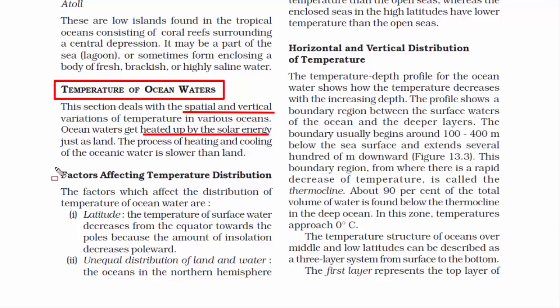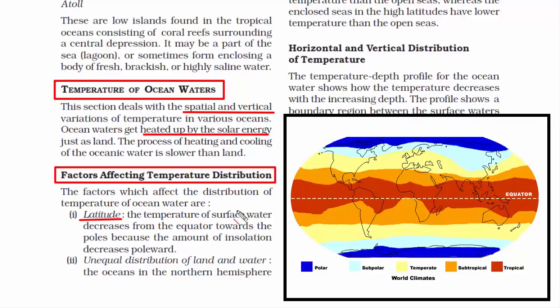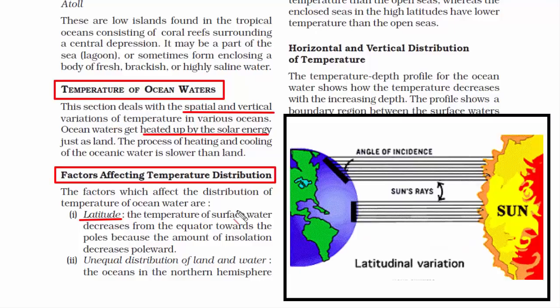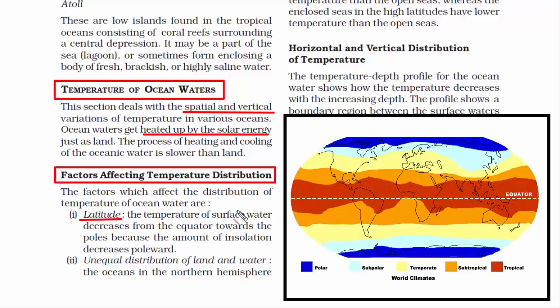Let's look into the factors affecting temperature distribution of ocean water. The first one is latitude. As we move away from the equator towards the poles, temperature drops. The reason is due to incoming solar energy — the sun's energy is more direct at the equator, and the vertical rays of the sun get concentrated on a smaller area, making the equatorial region hot.